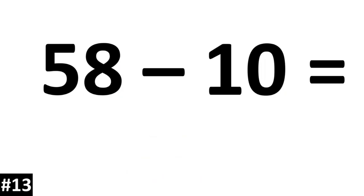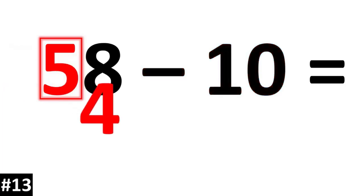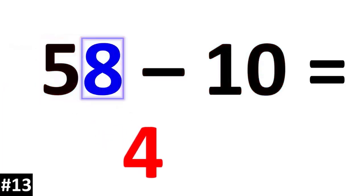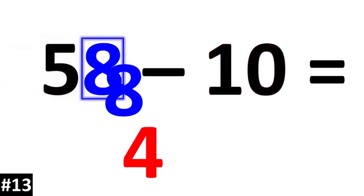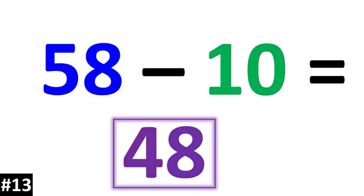58 minus 10. The tens value of 5 is going to go down to 4. The other number stays the same, so we bring down the 8, and 58 minus 10 is 48.